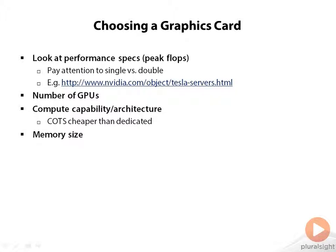When looking at the cards, you'll find different types of products. You'll find cheaper commercial off-the-shelf cards that gamers would typically buy, and you'll also find workstation cards — the more powerful GPUs that also have a display output. And then there are dedicated computational products like the Tesla architecture, which don't even have a display output.